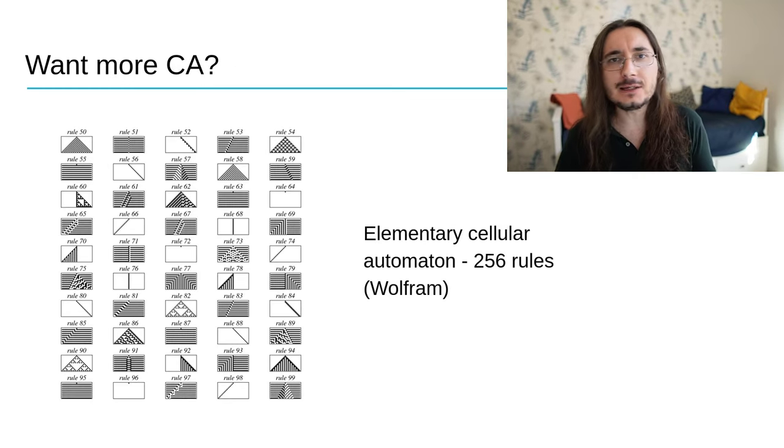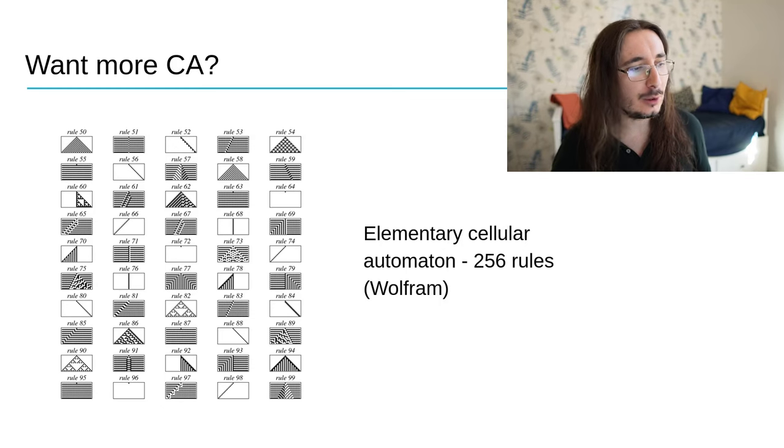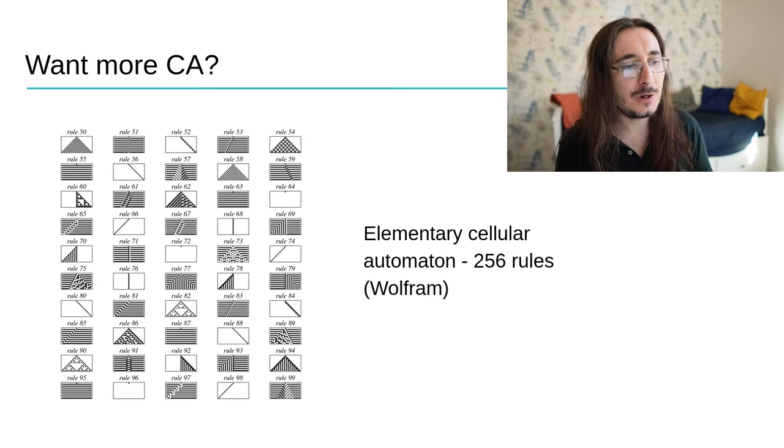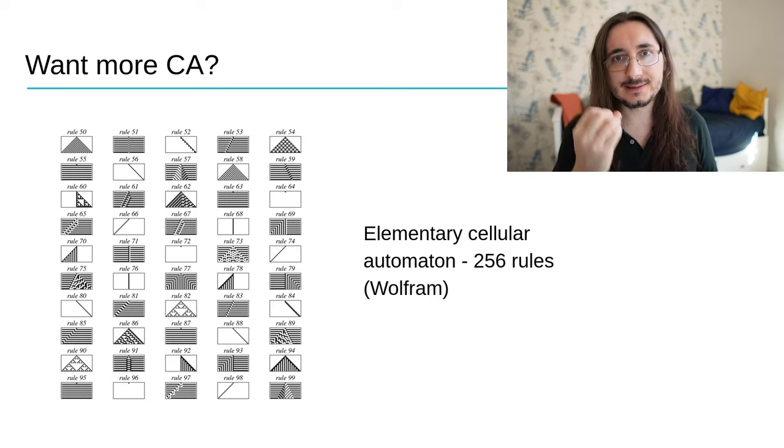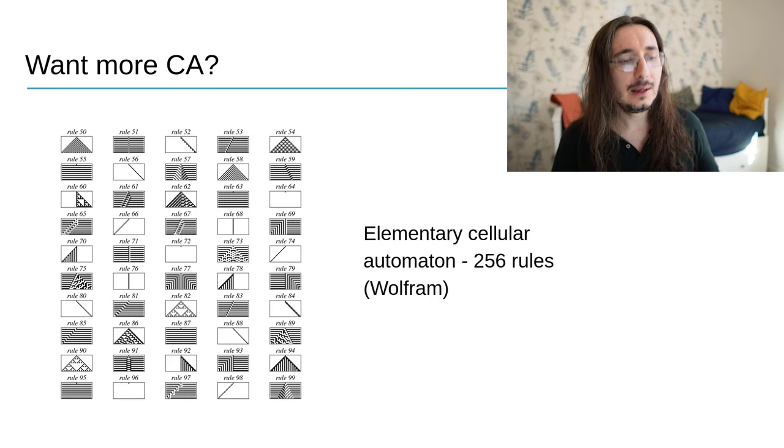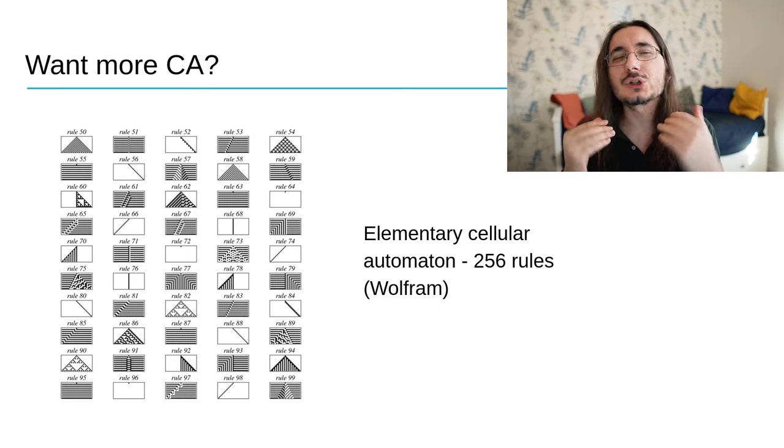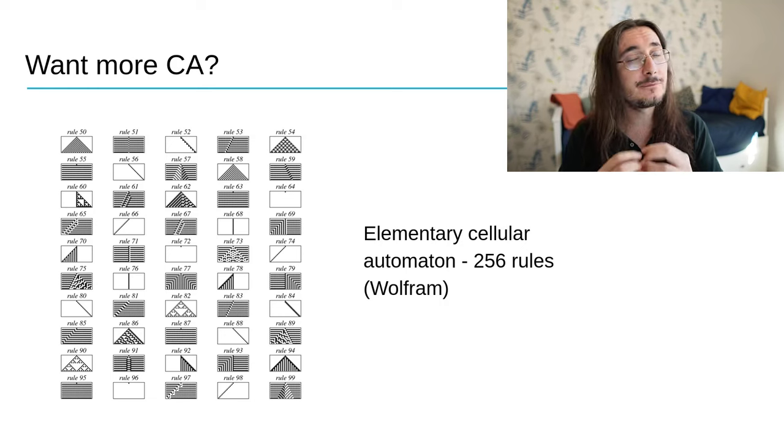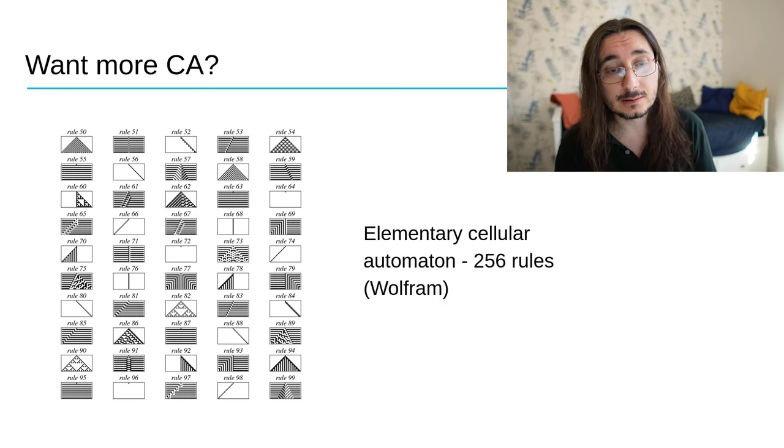Conway's Game of Life is but one of an infinite potential number of cellular automata out there. If you want to find more inspiration, other rules and cellular automata, I highly suggest you the elementary cellular automata that comes with 256 rules. These were developed by Wolfram. Just google them. It's quite amazing. These are extremely simple rules that create very complex self-similar behaviors and patterns.